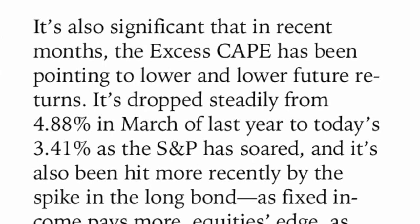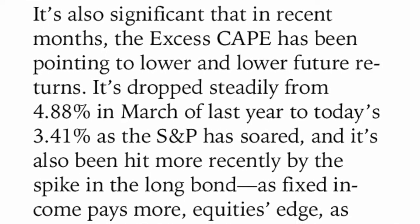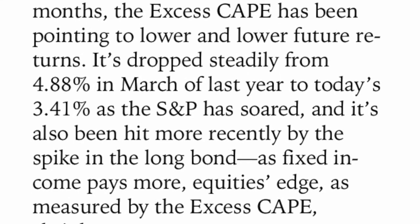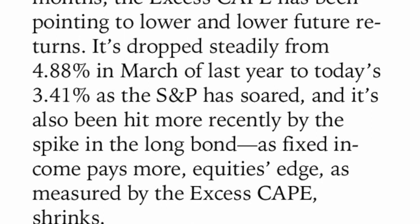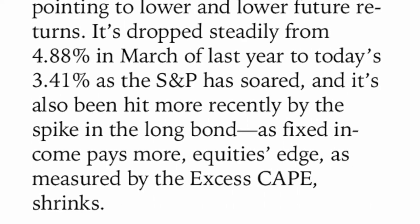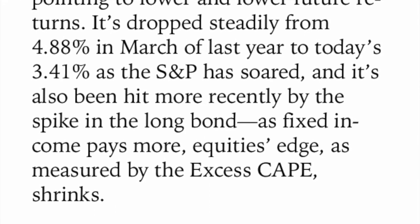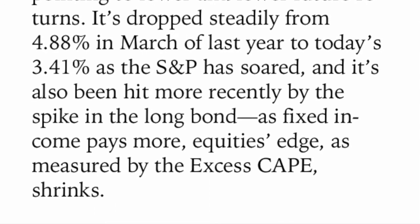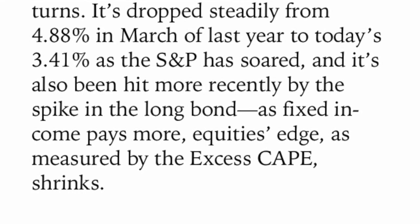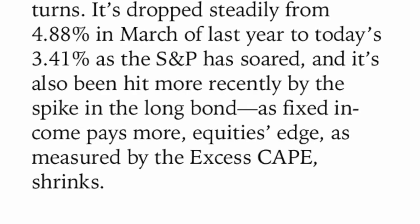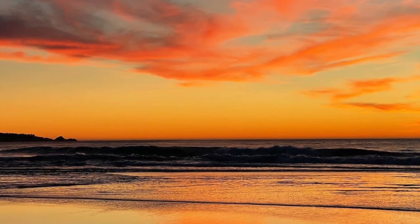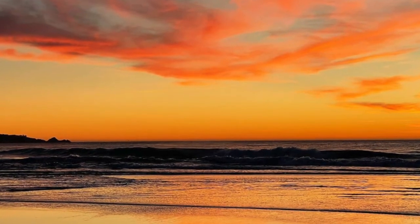It's also significant that in recent months, the Excess CAPE has been pointing to lower and lower future returns. It dropped steadily from 4.88% in March of last year to today's 3.41% as the S&P has soared, and it's also been hit more recently by the spike in the long bond. As fixed income pays more, equities' edge as measured by the CAPE shrinks. You're looking for that gap between bond yields and equities as measured in the S&P 500.